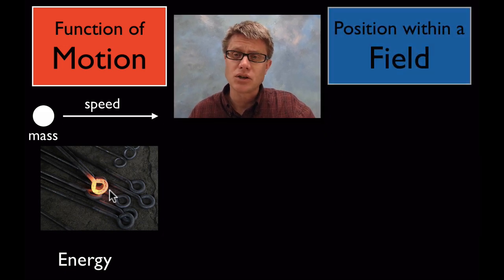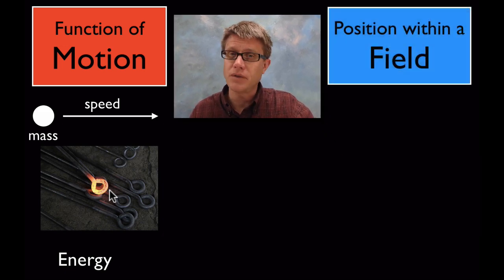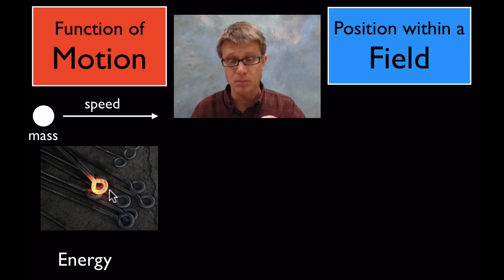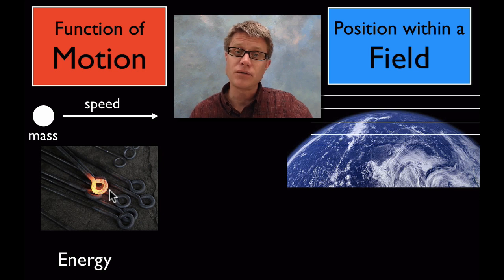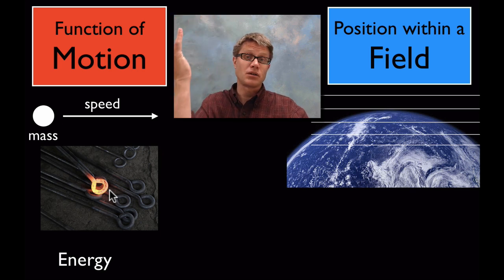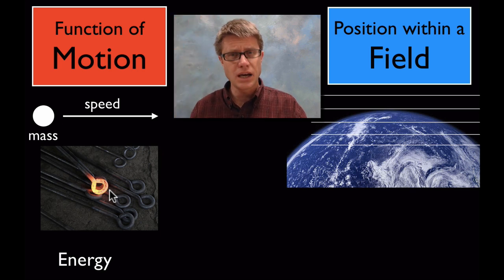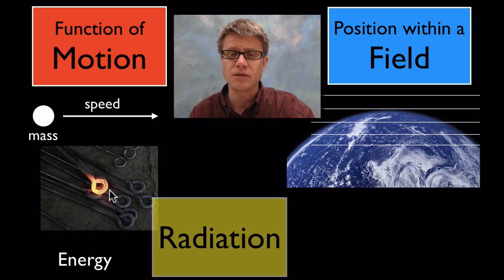We also have energy that's due to the position within a field. And remember a field is going to emanate. It could be gravitational field, a magnetic field, an electric field. But basically objects are going to have fields around them. So the earth is going to have gravitational fields around that. And based on where an object is inside those fields it's going to have varying amounts of energy. And so if we were to take a bowling ball and lift it a meter off the ground it's going to have more energy due to its position within that field.